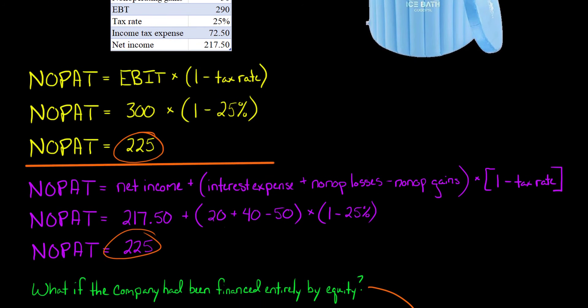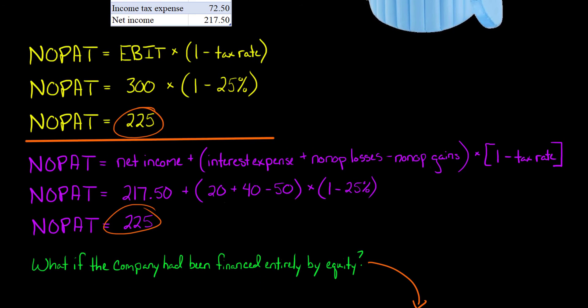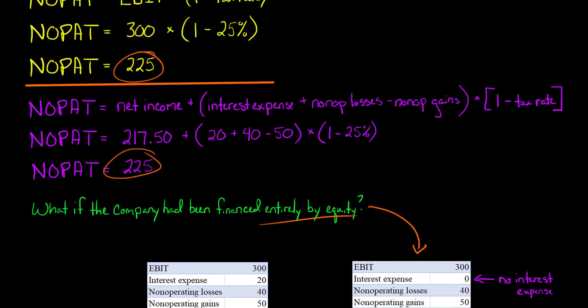So we end up with the same NOPAT either way. I want to show you in terms of the importance of NOPAT and interpreting it, why it matters. So what if this company had not had any debt at all? What if they'd been financed 100% by equity? How would that have changed things?